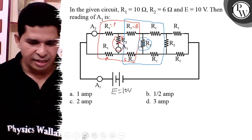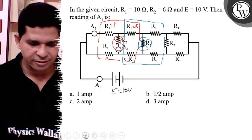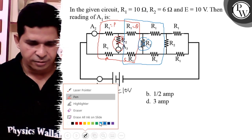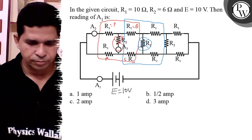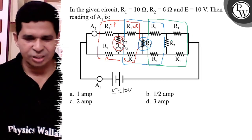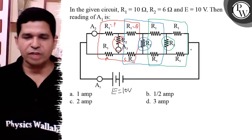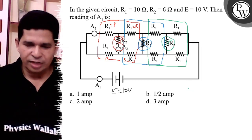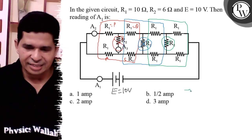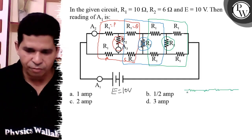Similarly, another cascading Wheatstone bridge is there and there is no current in that resistance also. So R2 is removed. After R2 is removed, the equivalent circuit consists of R1, R1, R1, and R1.